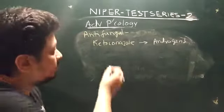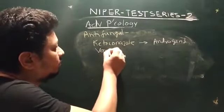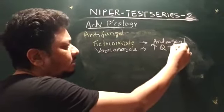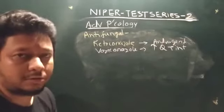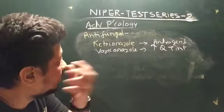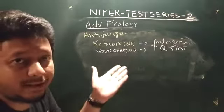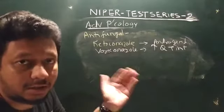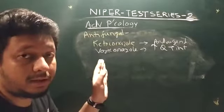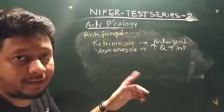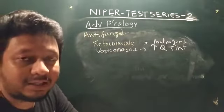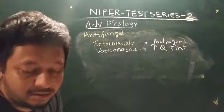Voriconazole's key side effect is prolonged QT interval. For drug interactions, you should remember individual side effects and recognize that if two drugs share the same side effect, they generally cannot be given together — this is how contraindications are reasoned.